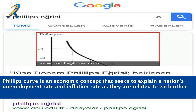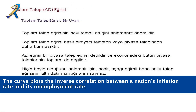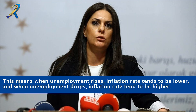The Phillips Curve is an economic concept that seeks to explain a nation's unemployment rate and inflation rate as they are related to each other. The curve plots the inverse correlation between a nation's inflation rate and its unemployment rate. This means when unemployment rises, inflation rate tends to be lower, and when unemployment drops, inflation rate tends to be higher.